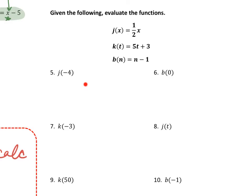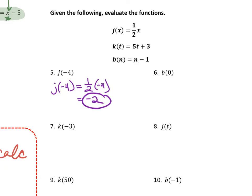Number five asks us to evaluate j of negative 4. We pick the j function and plug in negative 4 for all the x's. j of negative 4 equals one half times (−4), which is negative 2. These questions did not ask us to write an ordered pair, so we just need the output, which is negative 2. If it did ask for the ordered pair, it would be (−4, −2).